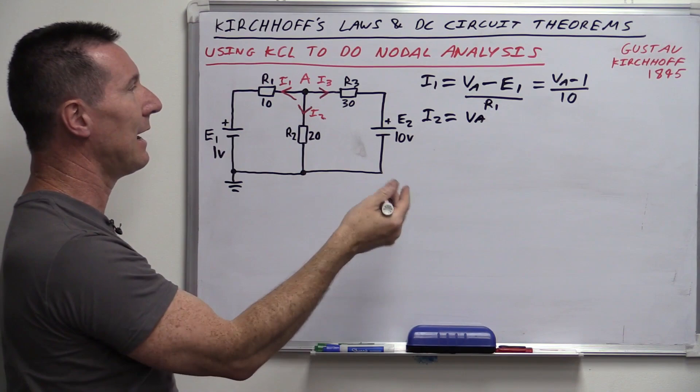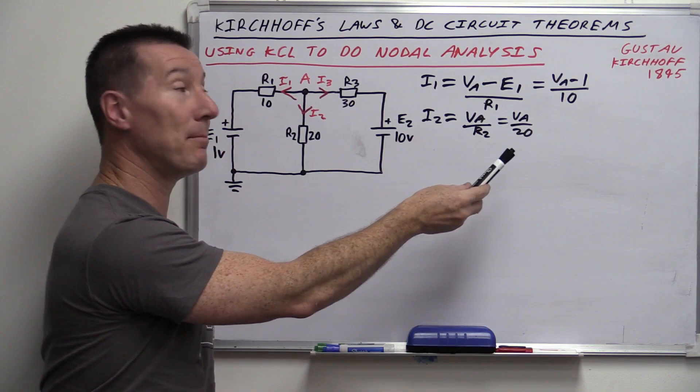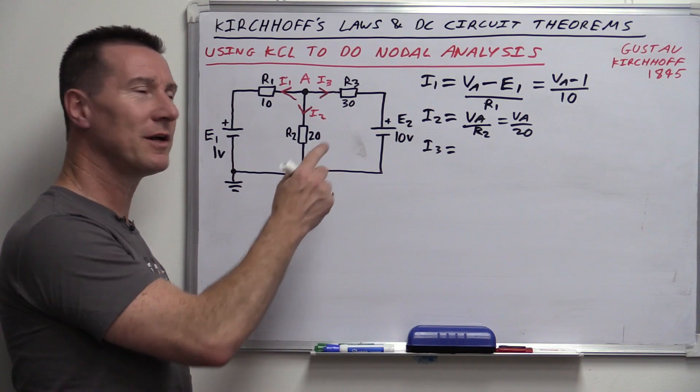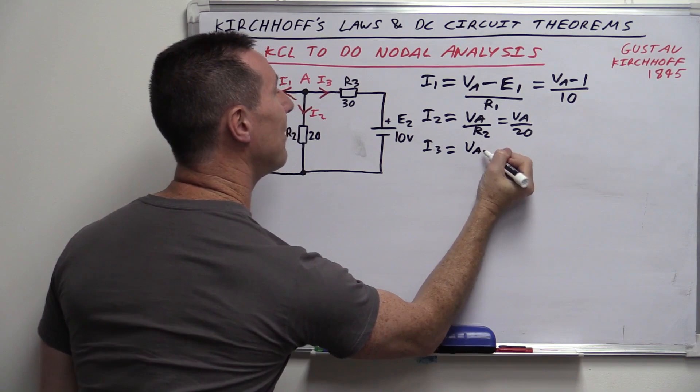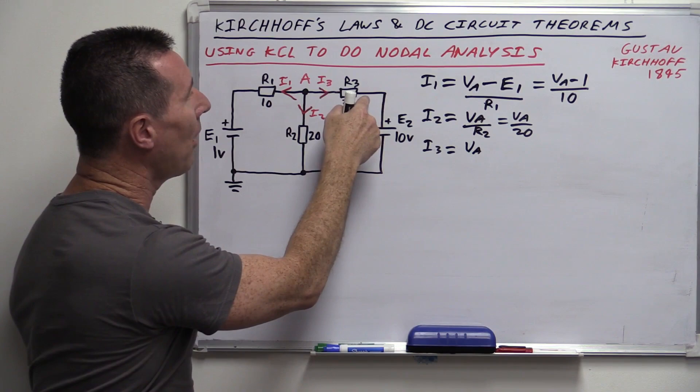Nodal analysis actually calculates voltages. Once we get VA, we can use Ohm's law — VA / R2 — to get our current. To solve: expand each term. (VA − 1)/10 becomes VA/10 − 1/10. VA/20 stays VA/20. (VA − 10)/30 becomes VA/30 − 10/30. This simplifies to 0.1·VA − 0.1 + 0.05·VA + 0.0333·VA − 0.333 = 0. Gathering like terms, we bring the constants to the right side: (0.1 + 0.05 + 0.0333)·VA = 0.1 + 0.333, giving 0.1833·VA = 0.4333.